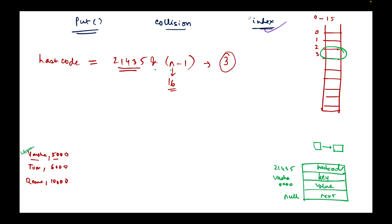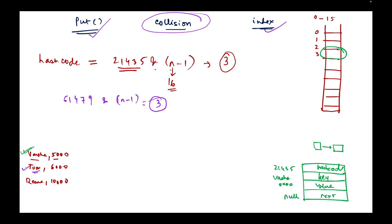Why does collision come into the picture? Suppose when I'm trying to add Tom, the hash code calculation on that key comes out to be 61479. Now 61479 AND (16-1) coincidentally gives out the same index — Tom would also be stored at index number 3, but we already have a node there for Varsha. Two different keys, Varsha and Tom, are pointing to the same location. This is what we call collision. To resolve this, we use a collision resolution strategy — a very common one is called the separate chaining method.